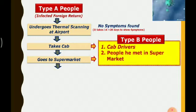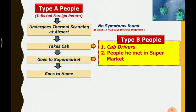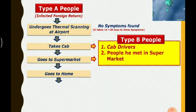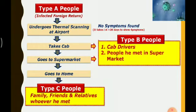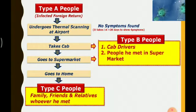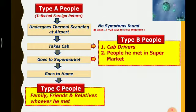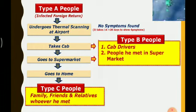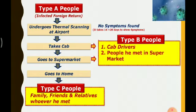After purchasing, the Type A person will go home, where he will meet his friends, family, and relatives. Whoever he meets will also get infected. These people are called Type C people.